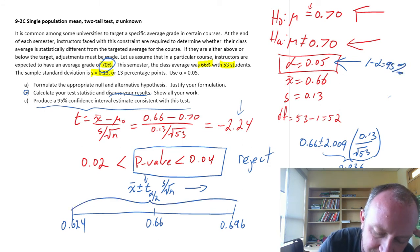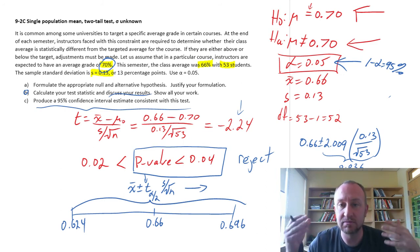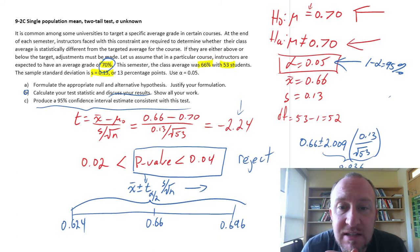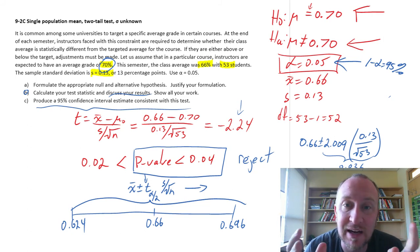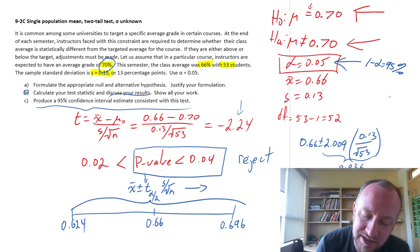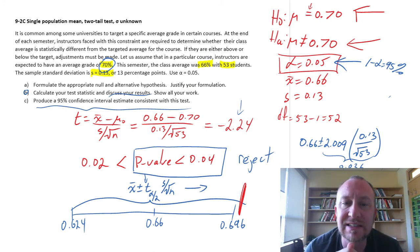Now, what this means, how is this consistent with our test? Well, if I'm 95% confident that the true population mean is between 62.4% and 69.6%, well, then I am 95% confident that it's not 70, because 70 does not exist in that interval. It's close, but it's out here. So it's consistent and 95% confident that the true mean is between 62.4% and 69.6%. Therefore, I am 95% confident that it is not 70, because 70, although it's close, it is outside of that interval.